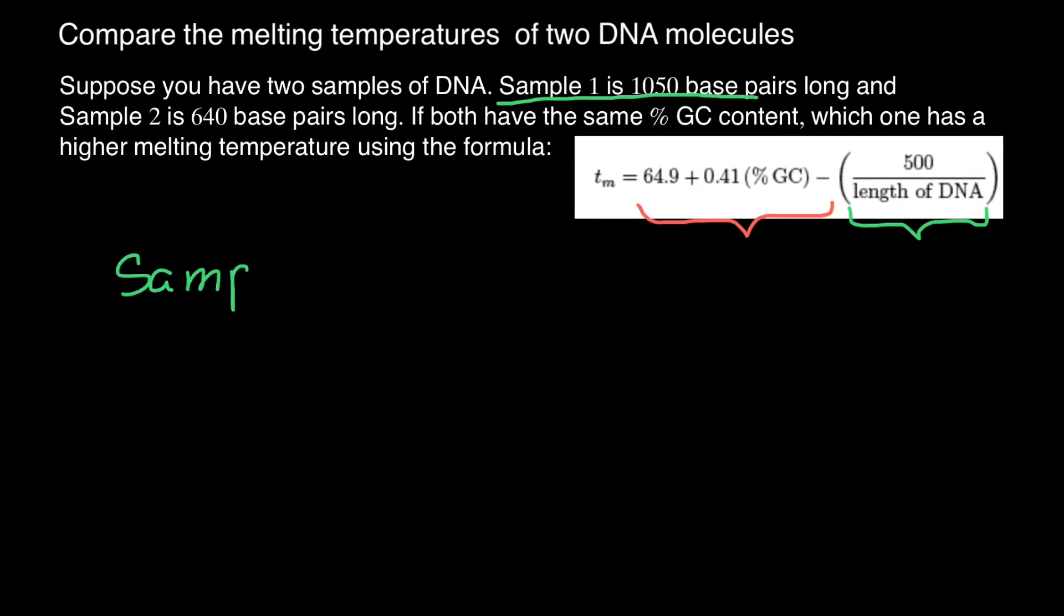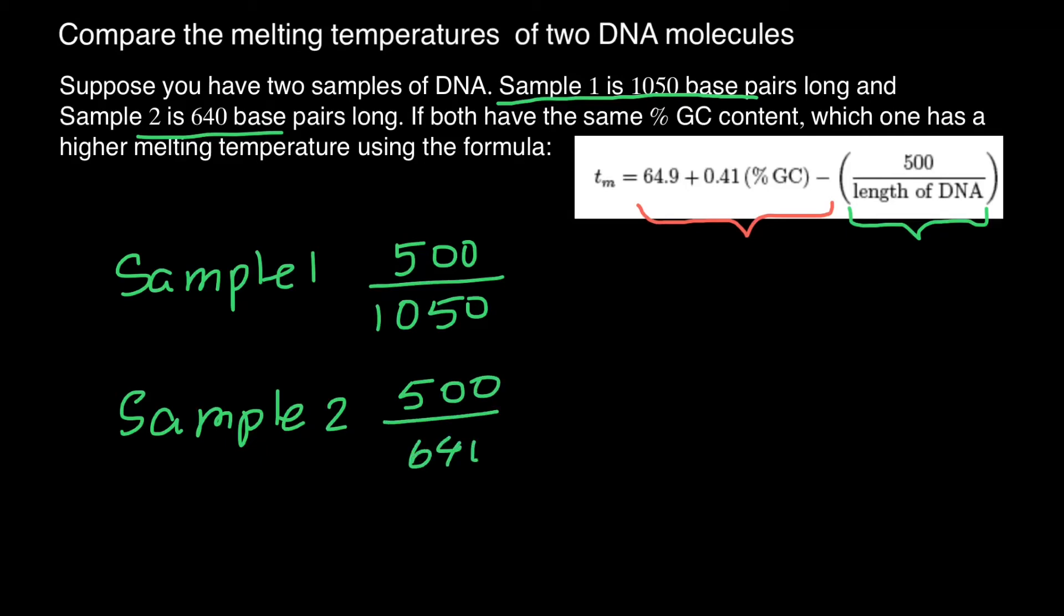Sample one, we have to divide 500 by 1050. And sample two, sample two has 640 bases, so 500 divided by 640 bases. In the first case, our answer is going to be 0.48. And in the second example, sample two, our answer is going to be 0.78.